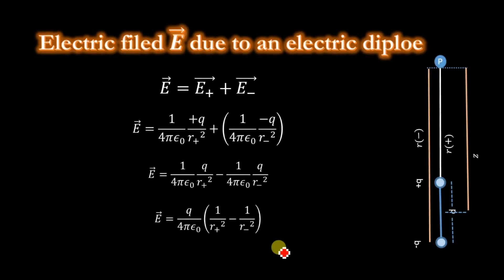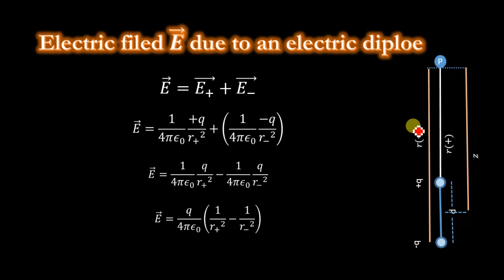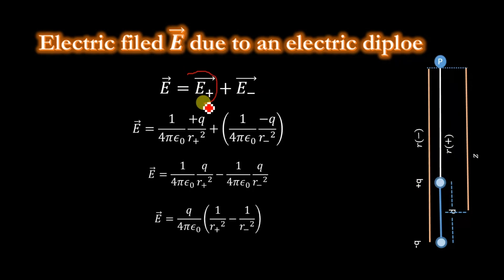Now we will determine the electric field at point P due to an electric dipole. In this diagram, the electric dipole consists of two charges: plus q and minus q, separated by distance d. The distance between point P and the negative charge is represented by r minus, and the distance between the positive charge and point P is represented by r plus. The distance z is measured from the midpoint of the two charges to point P. The electric field at P due to the positive charge is E plus, and due to the negative charge is E minus.